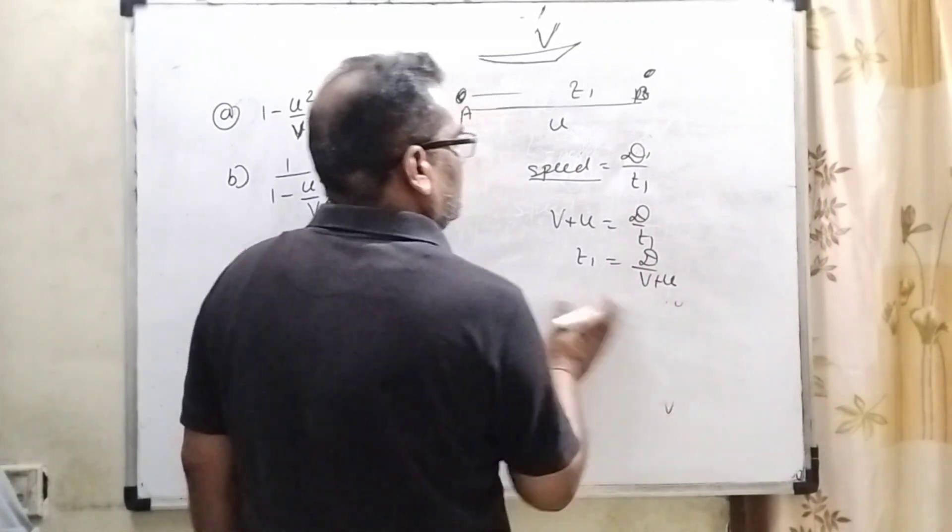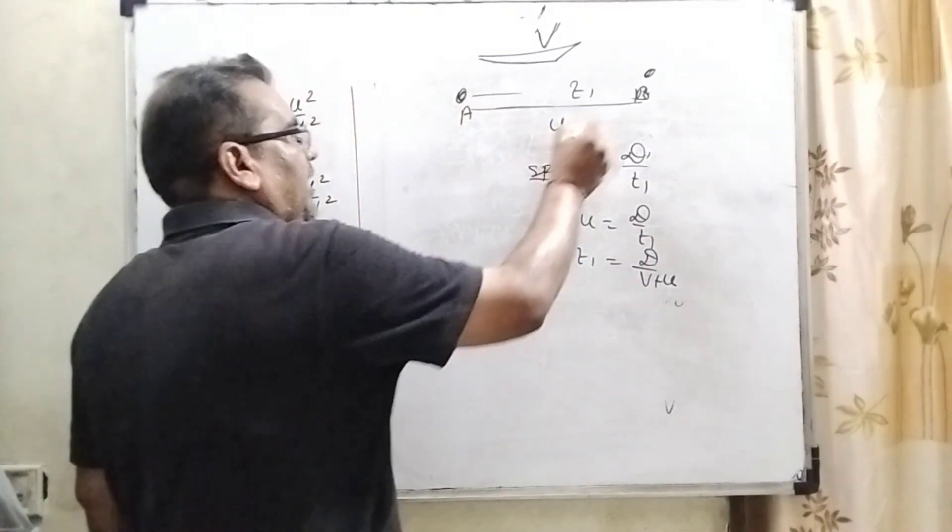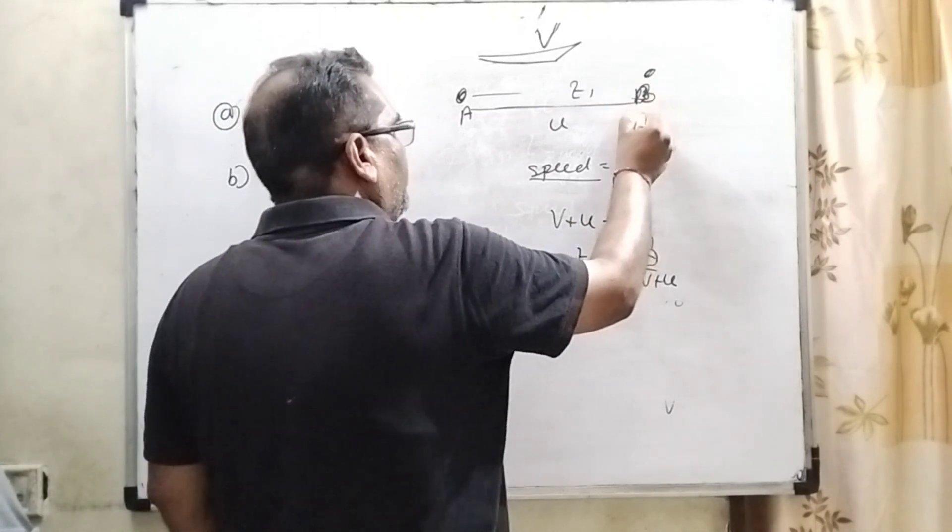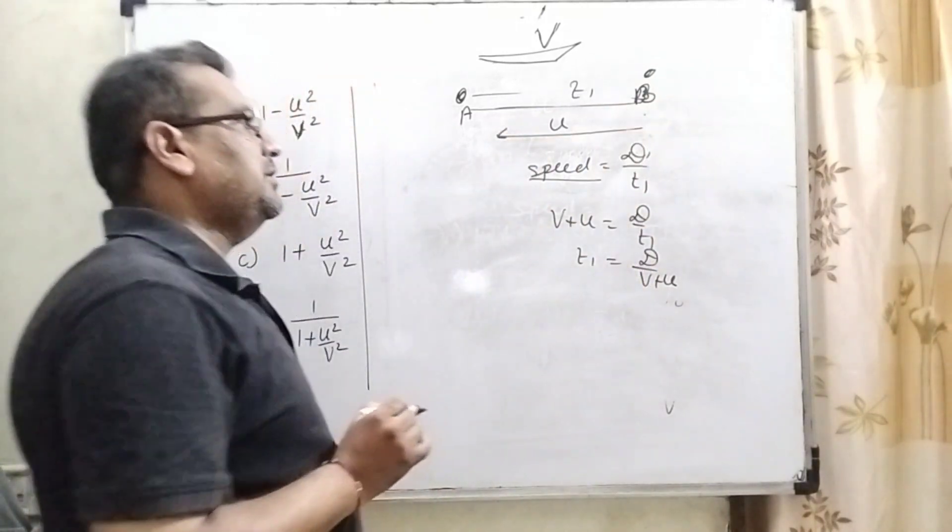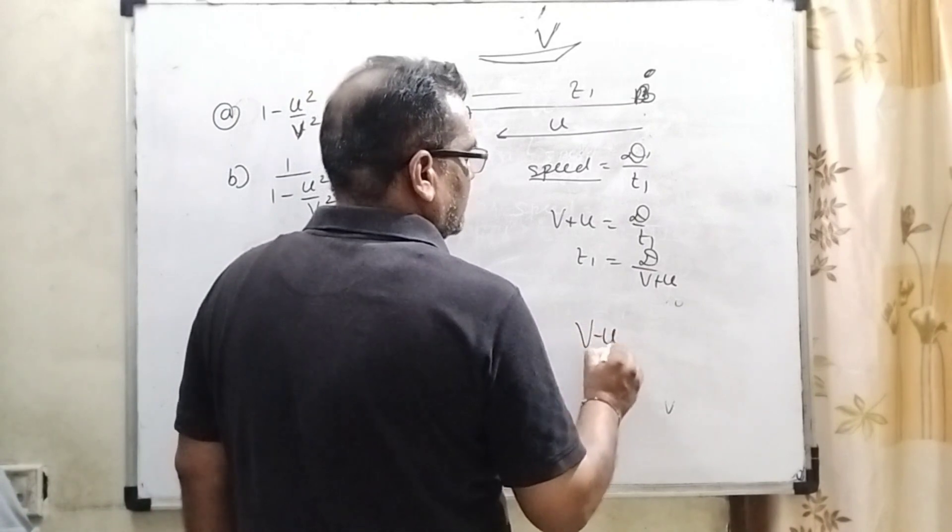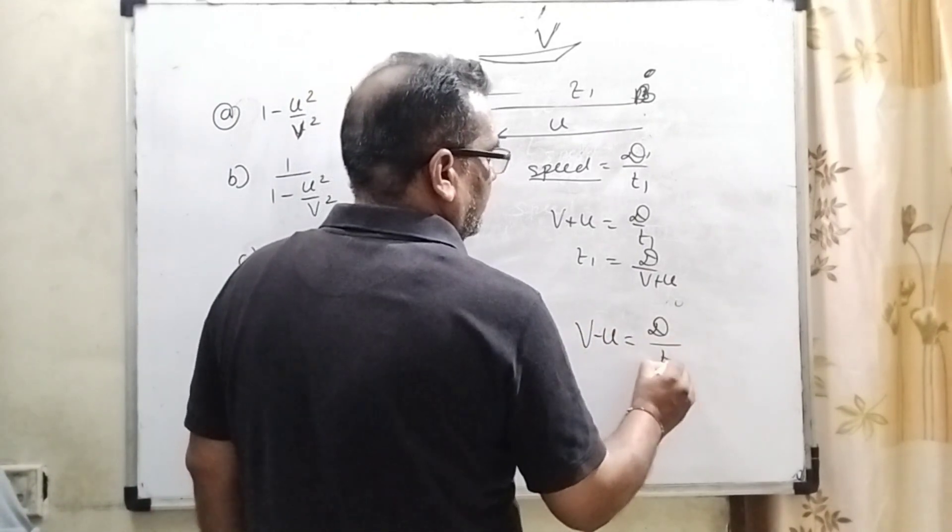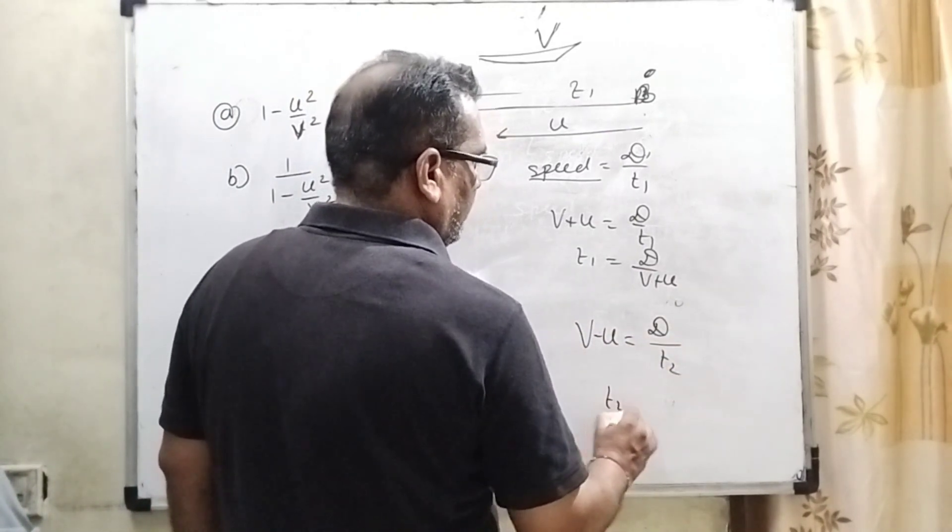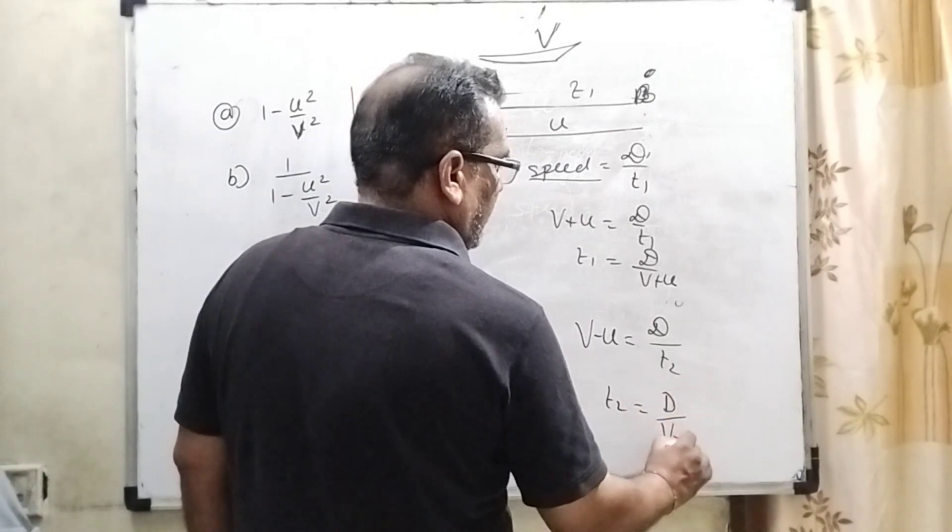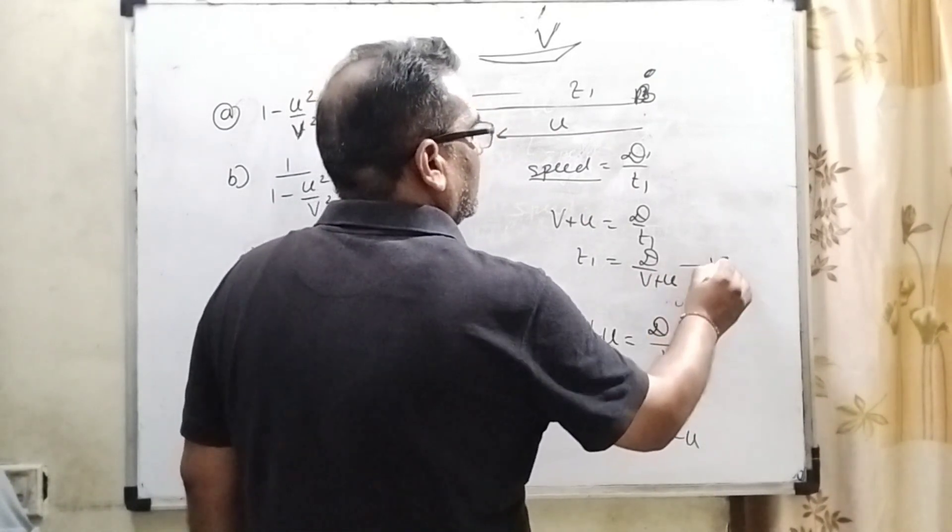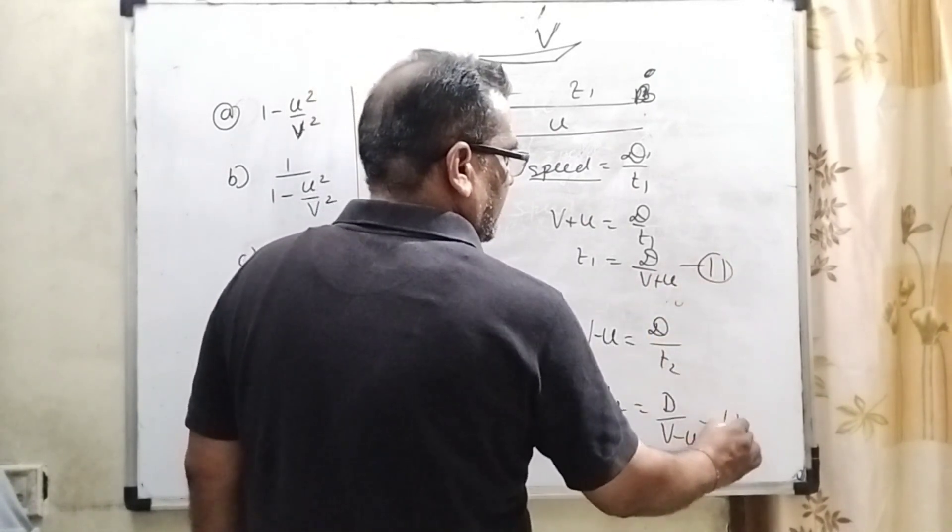So here T1. And then it goes to B to A means it is upstream. Then we are using V minus U equal to D by T2. Then T2 equal to D by V minus U. It is the second condition. It is third condition.